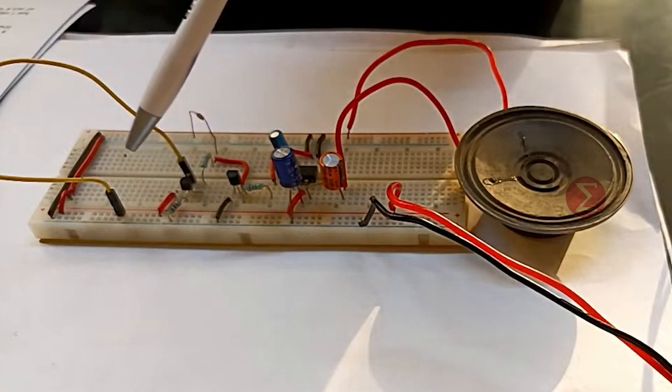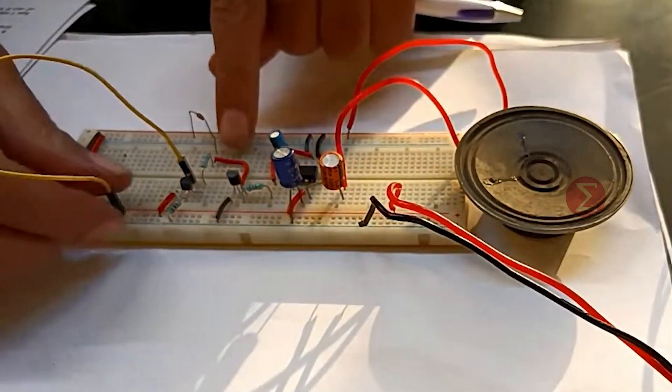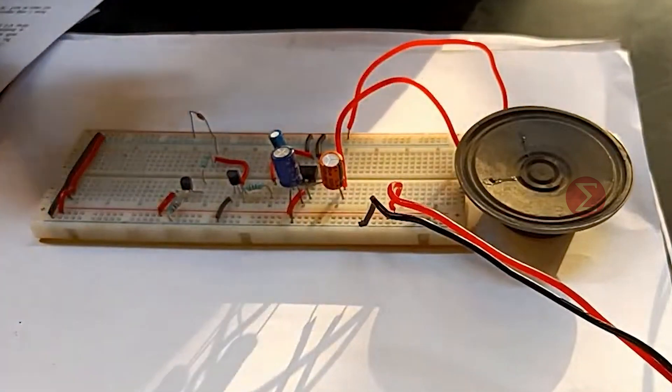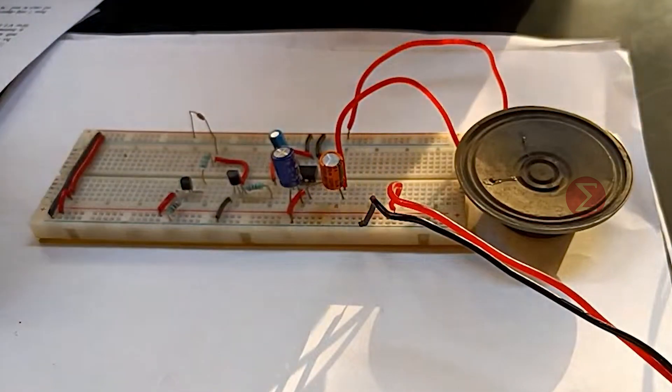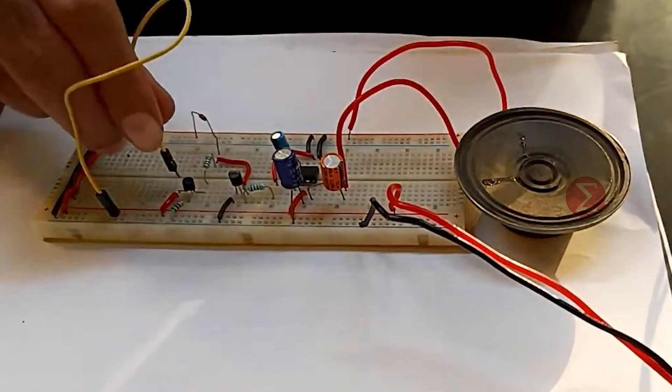This connecting wire forms a loop. This conducting wire creates a loop around the object you want to secure. Once the loop is disconnected the alarm blows, as the transistor will not conduct in this case and melody IC will not get the required voltage.